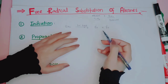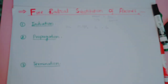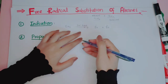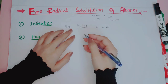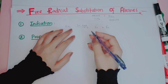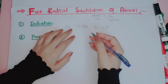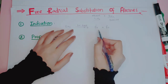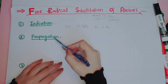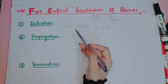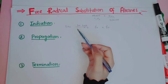We made a free radical for further reaction. In free radical substitution of alkanes, we need to make a free radical first, then substitute it onto the alkane. In the initiation step we formed bromine radicals, and now we will use them in the propagation step.